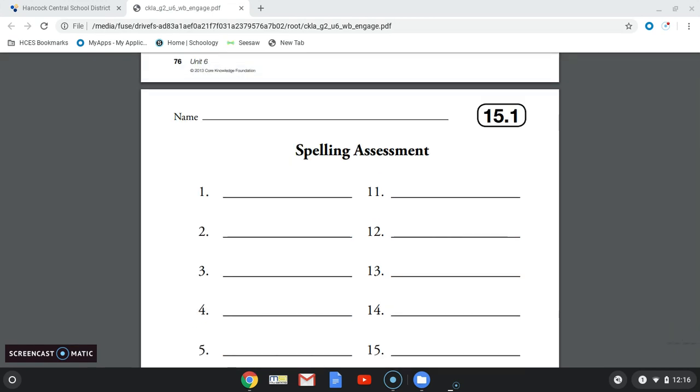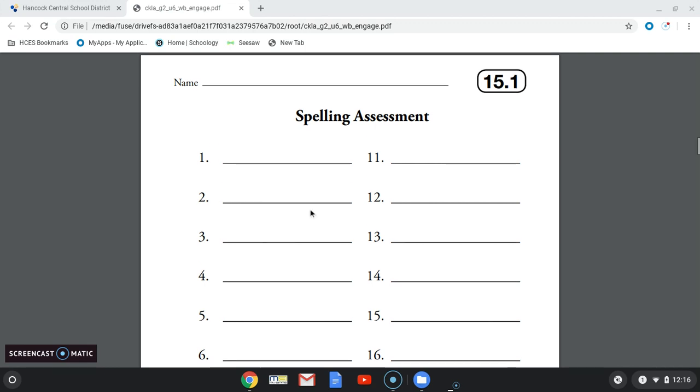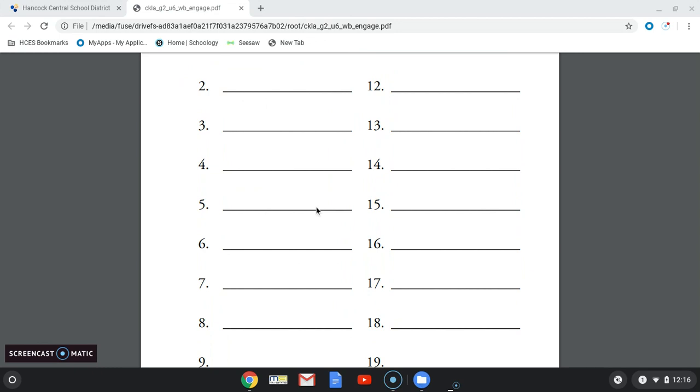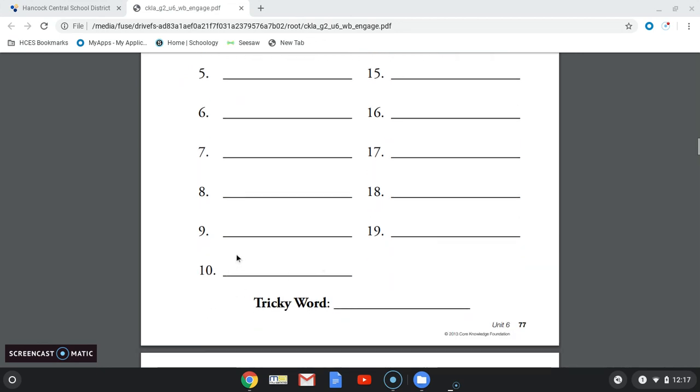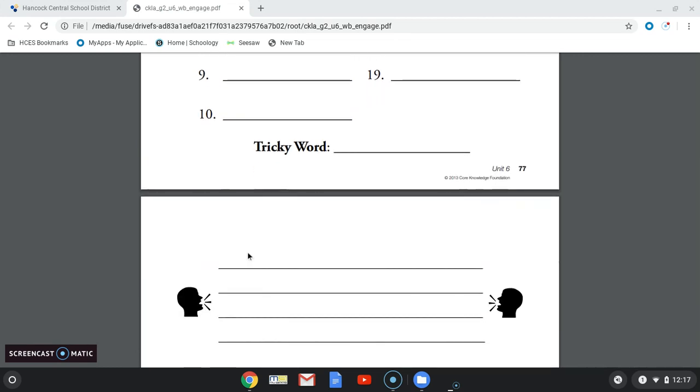12, addition. 13, nudge. 14, option. 15, judge. 16, action. 17, large. 18, change. 19, direction. Number 20, our tricky word, Europe. And finally, our sentence, Great Britain is located in Europe.